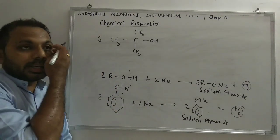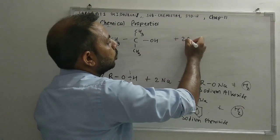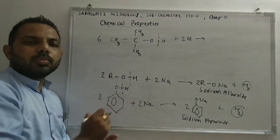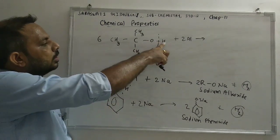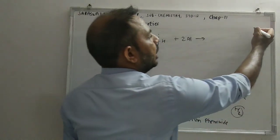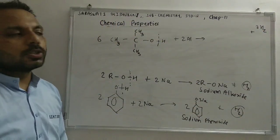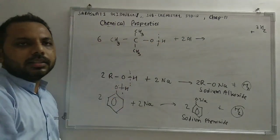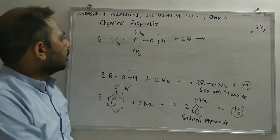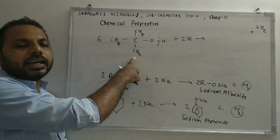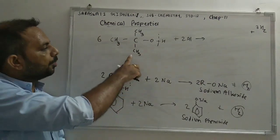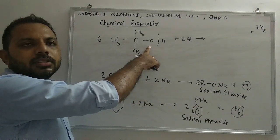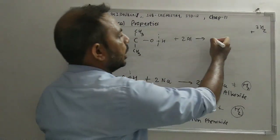We take 6 moles of tertiary alcohol reacting with 2 moles of aluminium. The O–H bond is broken, so 6 hydrogens are released in the form of 3H₂. What is left is tertiary alkoxide — specifically tertiary butoxide. So we have 6 moles of tertiary butoxide and 2 moles of aluminium. Since butoxide has a −1 charge and aluminium has a +3 charge, they combine.